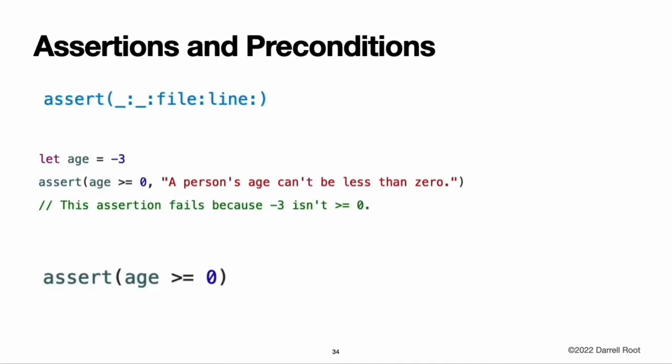Assertions and preconditions are checks that happen at runtime. You use them to make sure an essential condition is satisfied before executing any further code. If the boolean condition in the assertion or precondition evaluates to true, code execution continues as normal. If the condition evaluates to false, the current state of the program is invalid, code execution ends, and your app is terminated. You use assertions and preconditions to express the assumptions you make and the expectations you have while coding. Assertions help you find mistakes and incorrect assumptions during development, and preconditions help you detect issues in production.